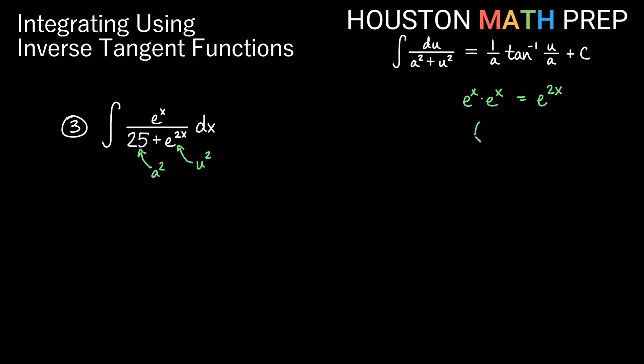e to the x times e to the x, though, is really e to the x squared, isn't it? So remember this other property of exponents, if you have an exponent and you have an exponent on that exponent, you can multiply those. So we really want to see this as a being 5, and we want to see u being e to the x. And this is really e to the x times itself down here.